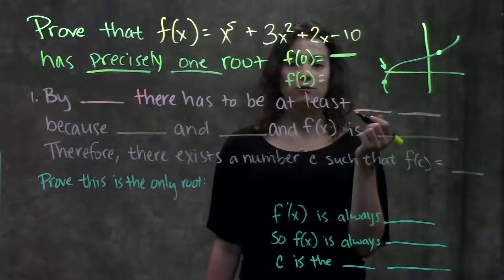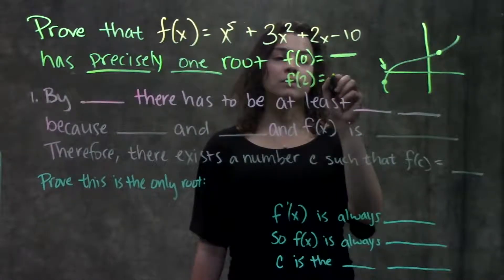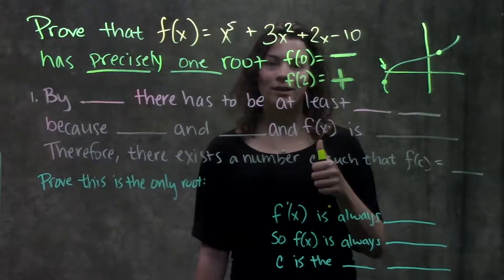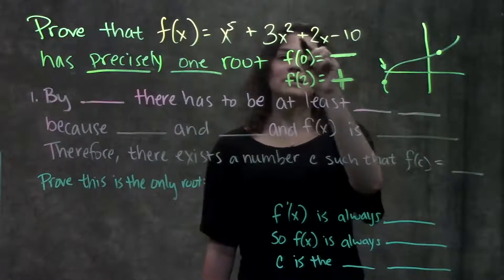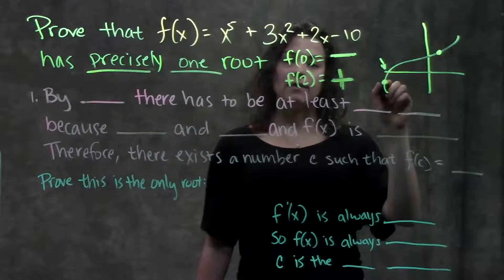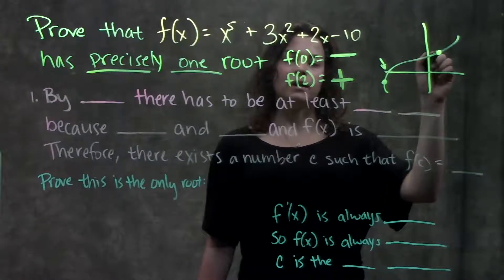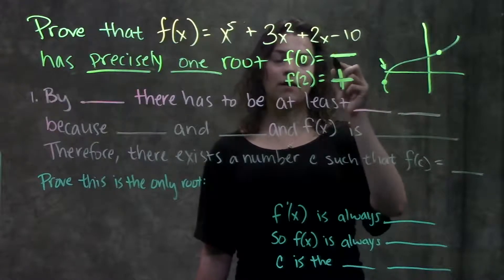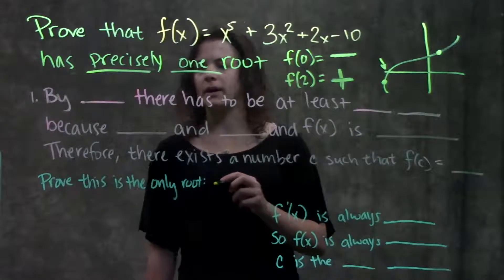Now let's try a bigger number, try to get a positive value. If we plugged in 2 for x, we plug it into this function, we end up getting positive 50, we get a positive number. Good news! That means that since this is a polynomial and it's continuous, and over here it's a negative value and over here it's a positive value, we know that there's at least one root of this function. So let's write that in our first part.